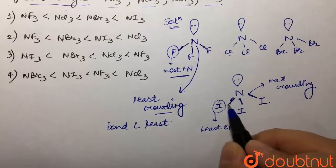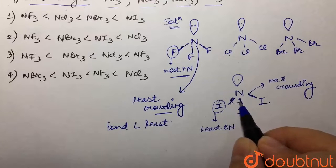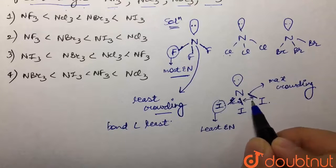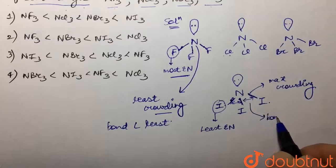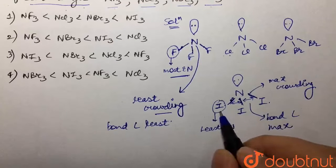And due to this maximum crowding, what would happen? The bonds would repel each other. And due to this repulsion, the bond angle would increase and the bond angle would be maximum because this is the least electronegative atom attached to nitrogen.